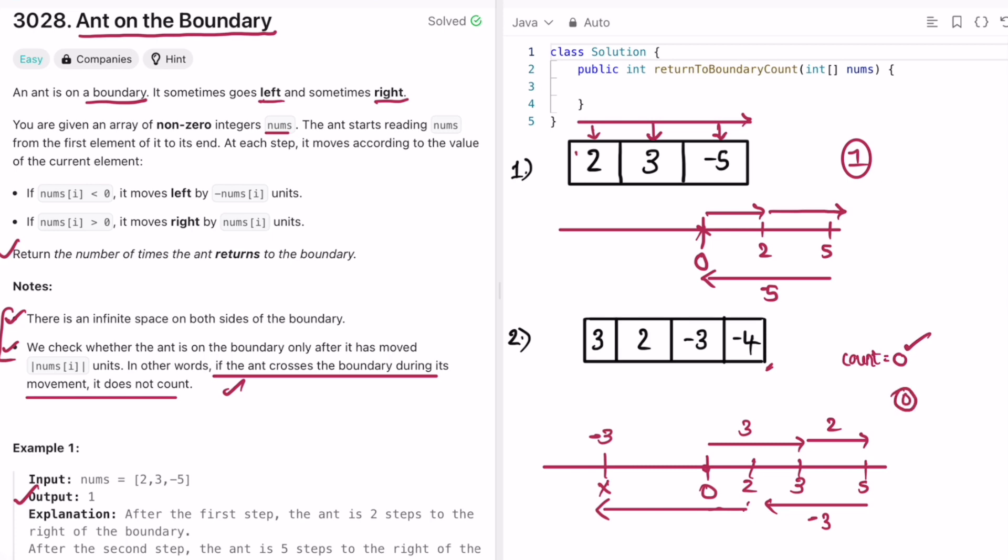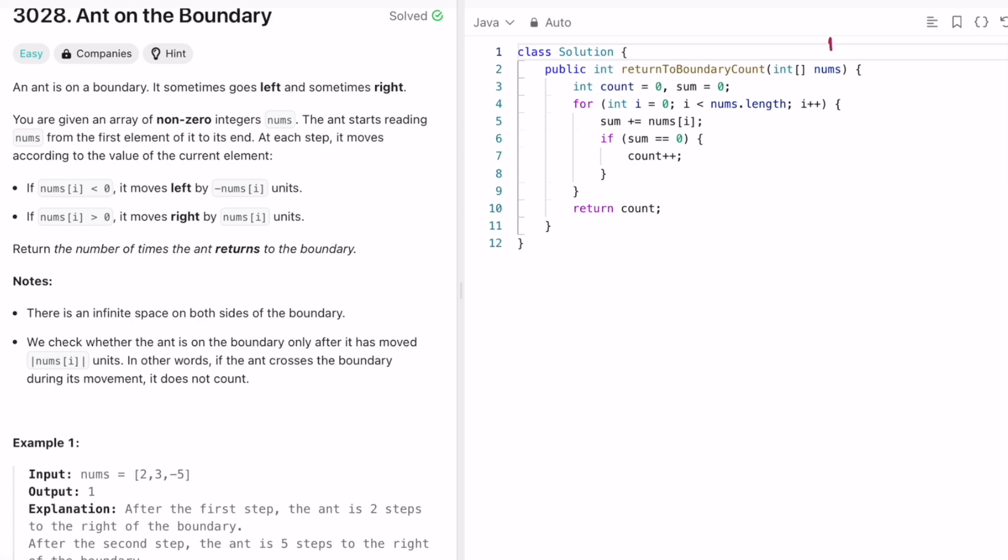So now let's implement the same steps in a Java program. So let's take the first example. This is the input given to us and the input is two, three, minus five. And now count will be the number of times it came back to boundary. And now we have to keep the track of the sum and we iterate from left to right. So starting it's here.